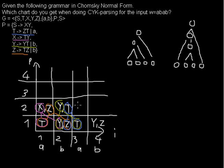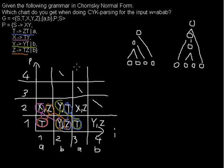At the third cell for span 2, we want to find a symbol we can derive to T and Y — that would be X again — or T and Z, which would be Z again. So we write X and Z. The last cell in this row is left empty because starting at the fourth position with a span of two letters is impossible — there's only one letter left, so it cannot be filled.